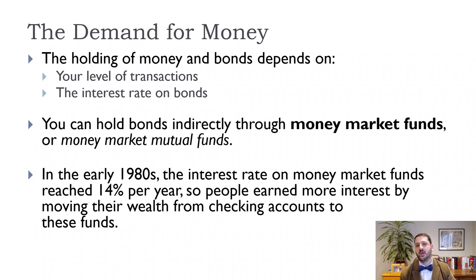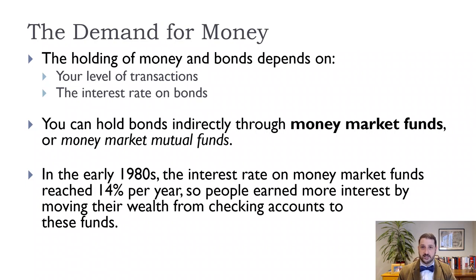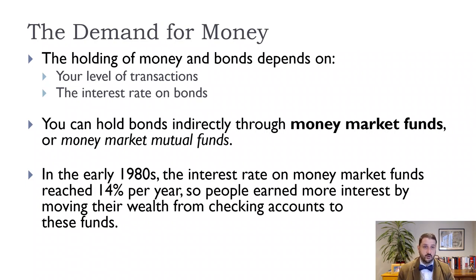If you're buying more stuff, you need more money, and if the interest rate is higher, the opportunity cost of holding money is higher, so you want to hold less. Right now interest rates are very low — savings accounts pay around 0.25% — so there's little reason to hold bonds. But back in the early 1980s, bond interest rates were 10, 12, 15, even 20 percent, so you had to be much more careful about what you kept in checking versus a money market account or certificate of deposit that was less liquid but paid a higher rate.